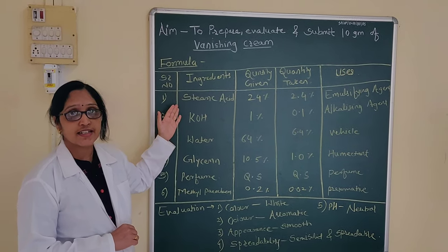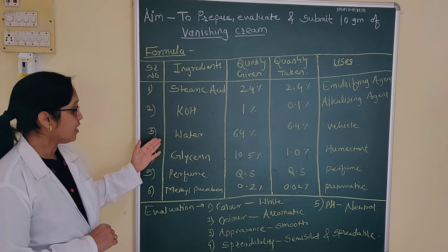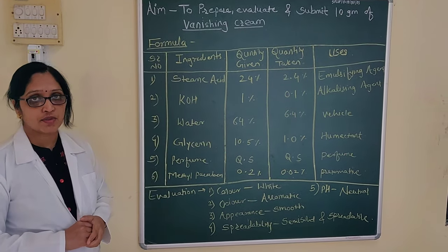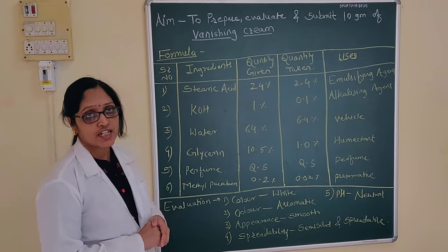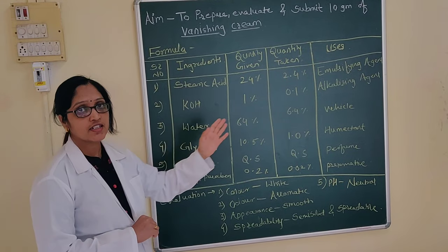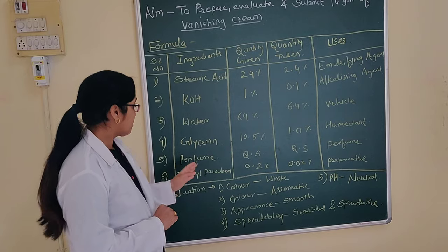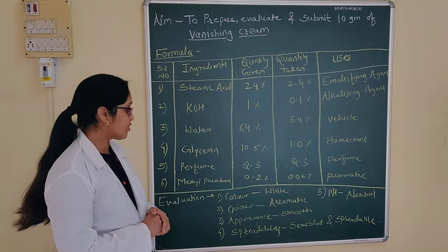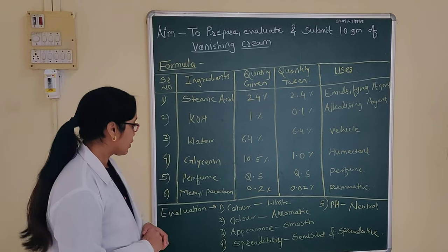The ingredients used are: stearic acid, potassium hydroxide, water, glycerin, perfume, and ethyl paraben. Stearic acid acts as an emulsifying agent; potassium hydroxide acts as an alkalizing agent; water acts as a vehicle; glycerin acts as a humectant; perfume is used for fragrance; and ethyl paraben is used as a preservative.